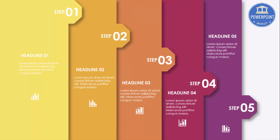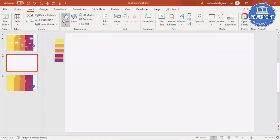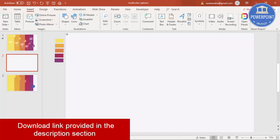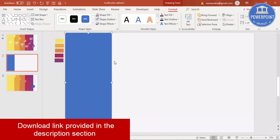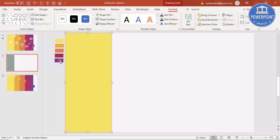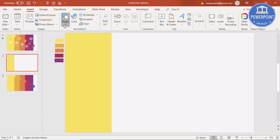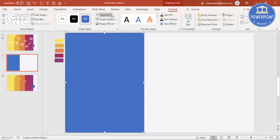Let's see how to create this useful infographic slide in PowerPoint. I'm going to add five rectangles. Go to Insert > Shapes, select a rectangle, and draw it. For shape outline, make it no outline, and fill it with your chosen shape fill color. Then insert a second rectangle the same way — no outline and shape fill.